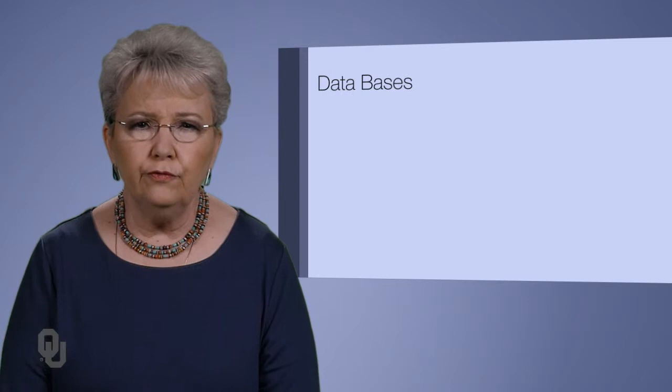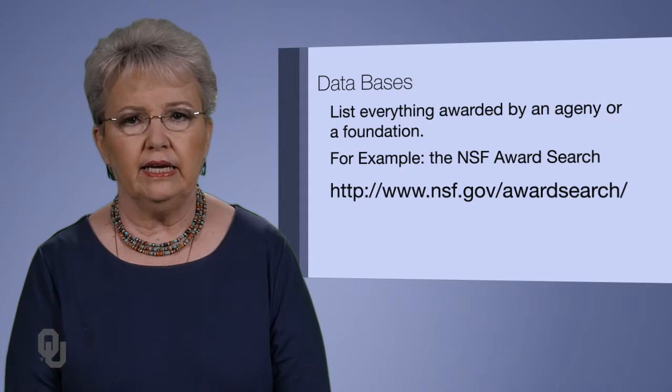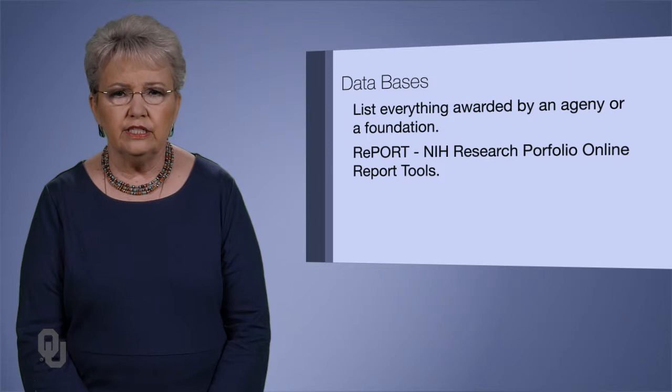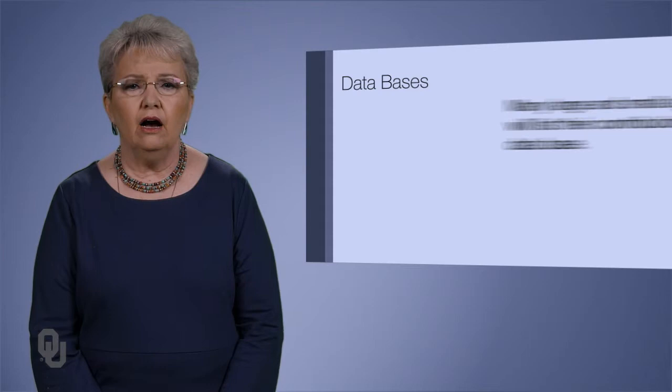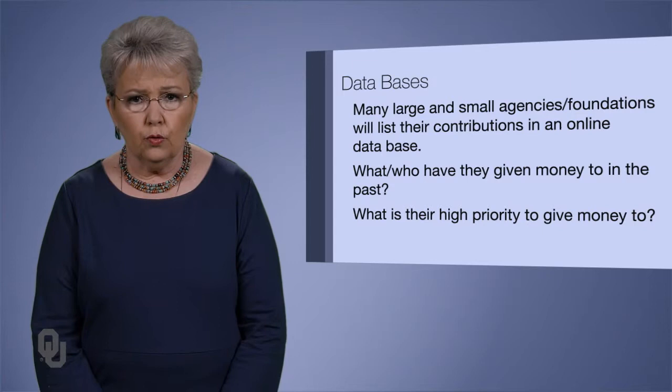There are several databases that list everything awarded by an agency or foundation. The National Science Foundation Award Search lists everything they've given away since 1950. There is also a report for all National Institutes of Health grants. Many large foundations, even local small foundations, will list some or all of their gifts on their website. You want to look at what they've given money to in the past and what their high priority is.